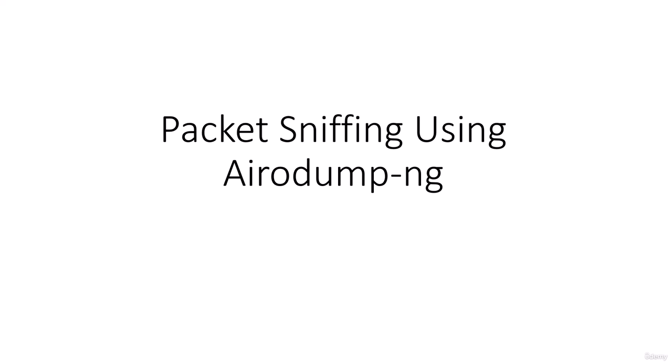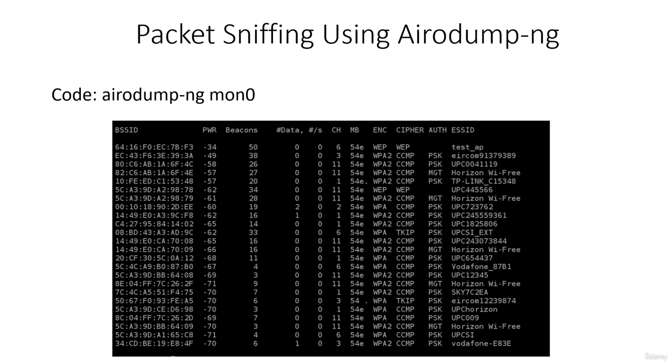We can run airodump-ng against all networks around us to collect any packets within our Wi-Fi range, or we can run it against a certain access point to collect packets from a specific Wi-Fi network. First, you need your Wi-Fi card in monitor mode. Since my card is already in monitor mode, we run a simple command: airodump-ng mon0, specifying the name of the Wi-Fi card that has monitor mode enabled.